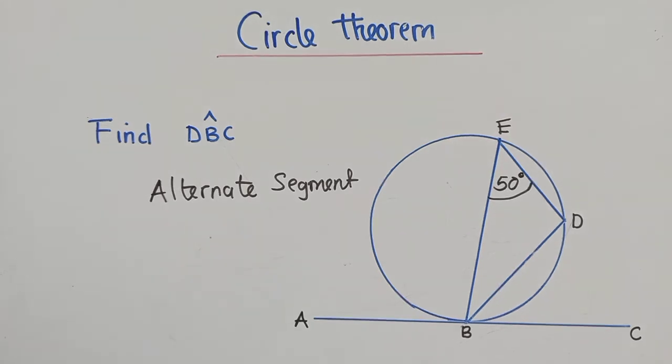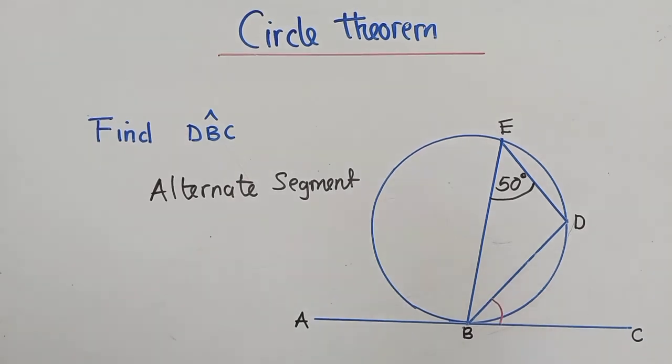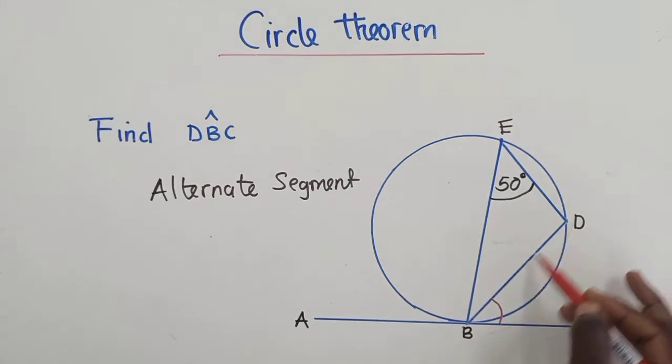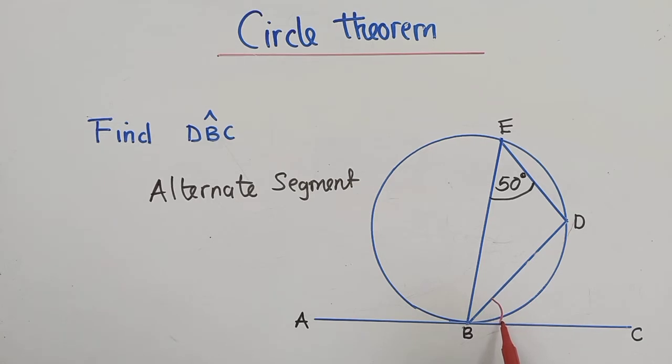So what does this property say? This property says that if you've got - we want to find the angle, in this case this is the angle that we need to find, and it's between a tangent line and the chord. Can you see this chord? There is an angle that we need to find, so I'll just say this angle is 50 degrees.